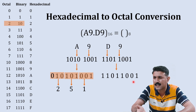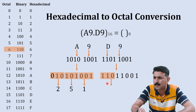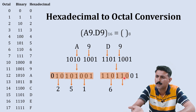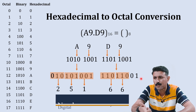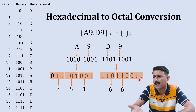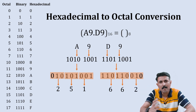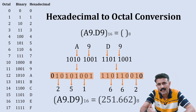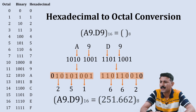For the fractional part D9, we start grouping from the left. The first group of three is one one zero, equivalent to six. The next group of three is again one one zero, equivalent to six. The remaining digits zero and one get a zero added, becoming zero one zero, which is equivalent to two. So we write two here. Combining the integer and fractional parts gives us the complete octal equivalent of the hexadecimal number.